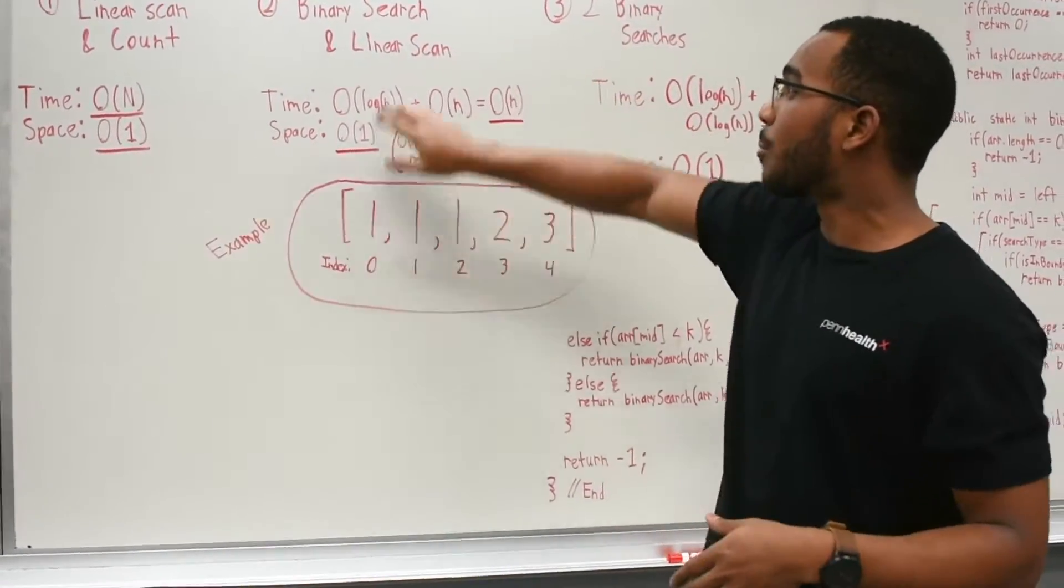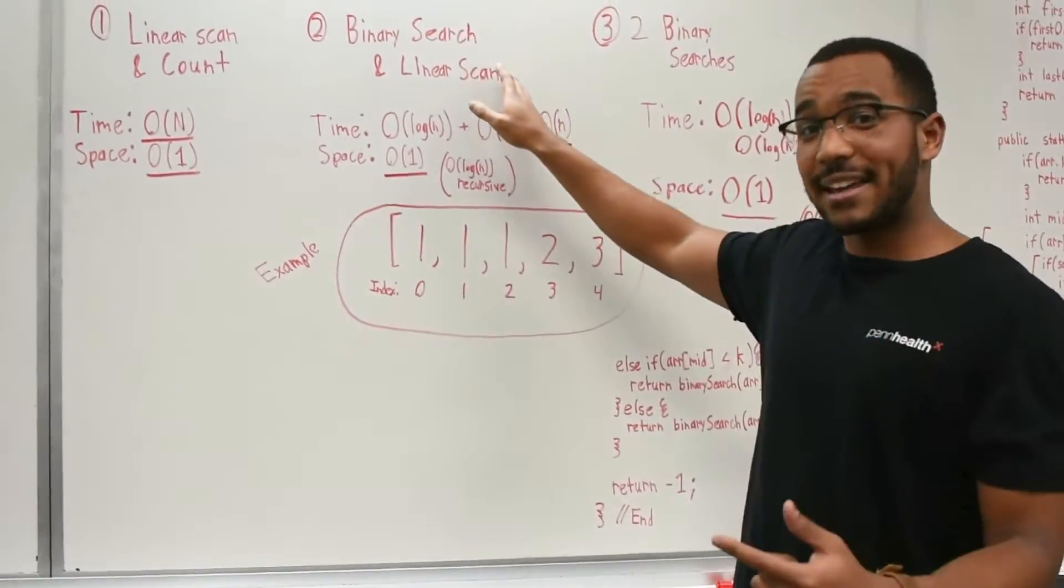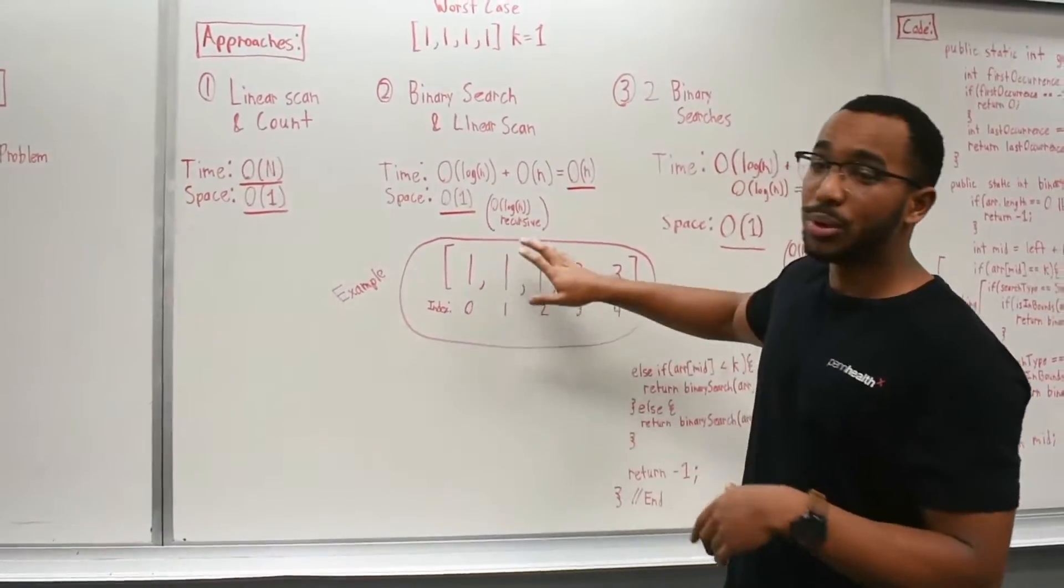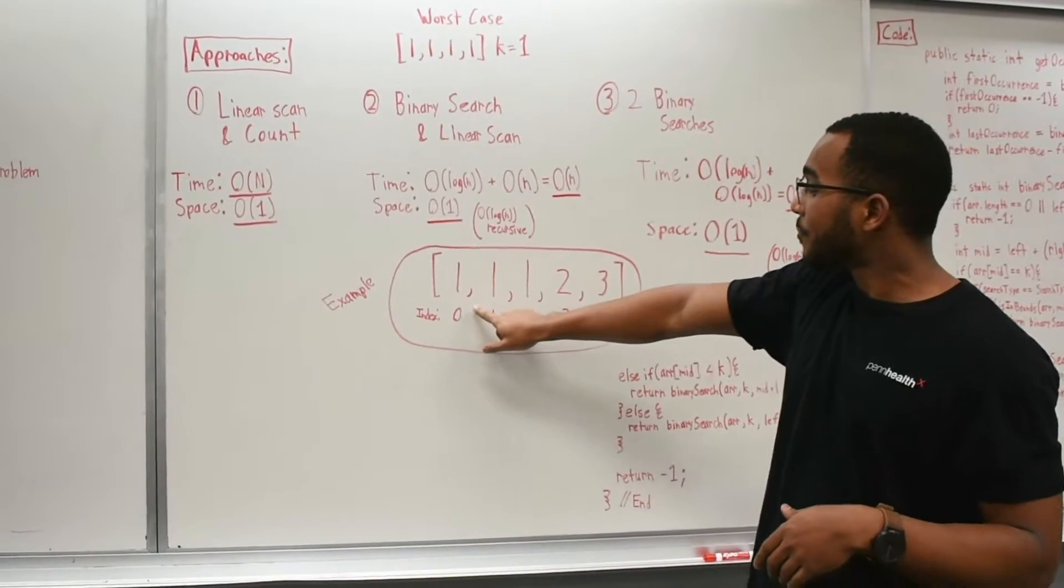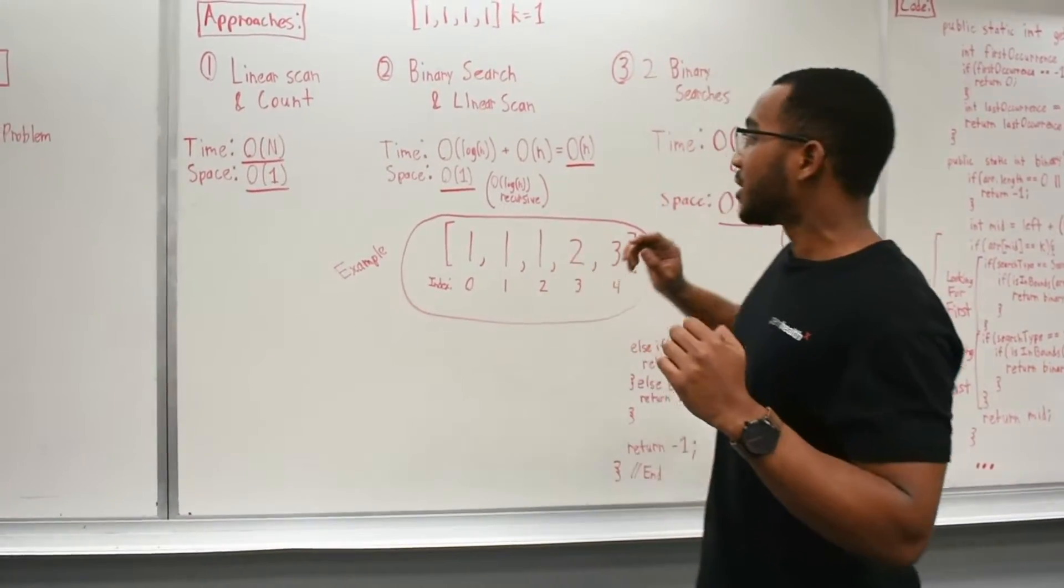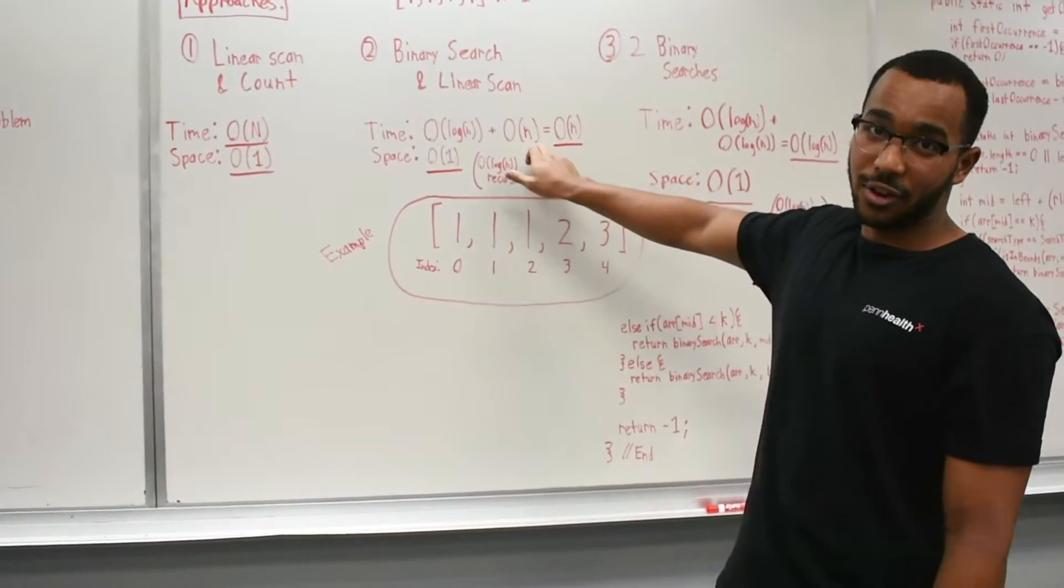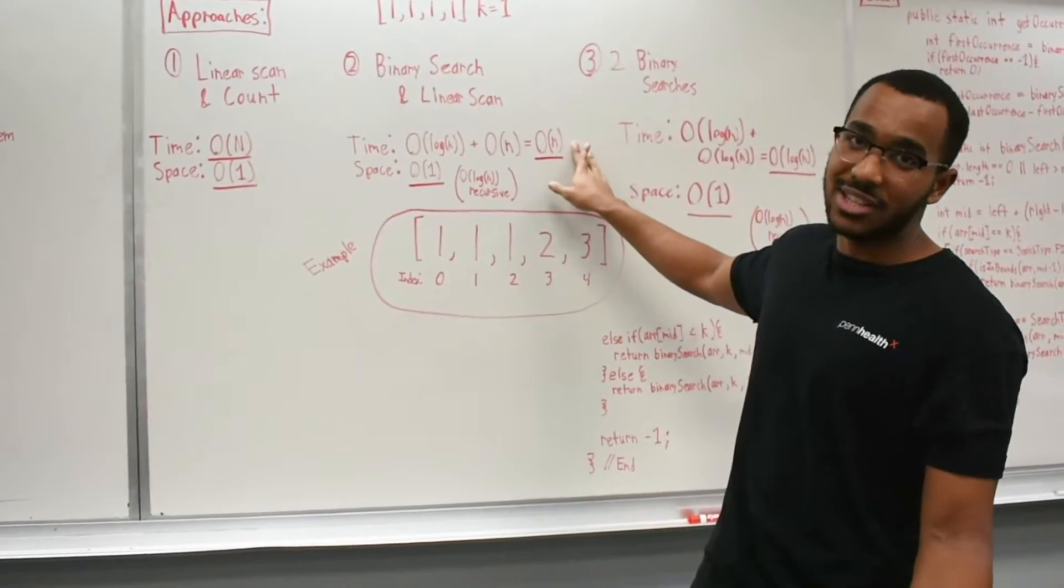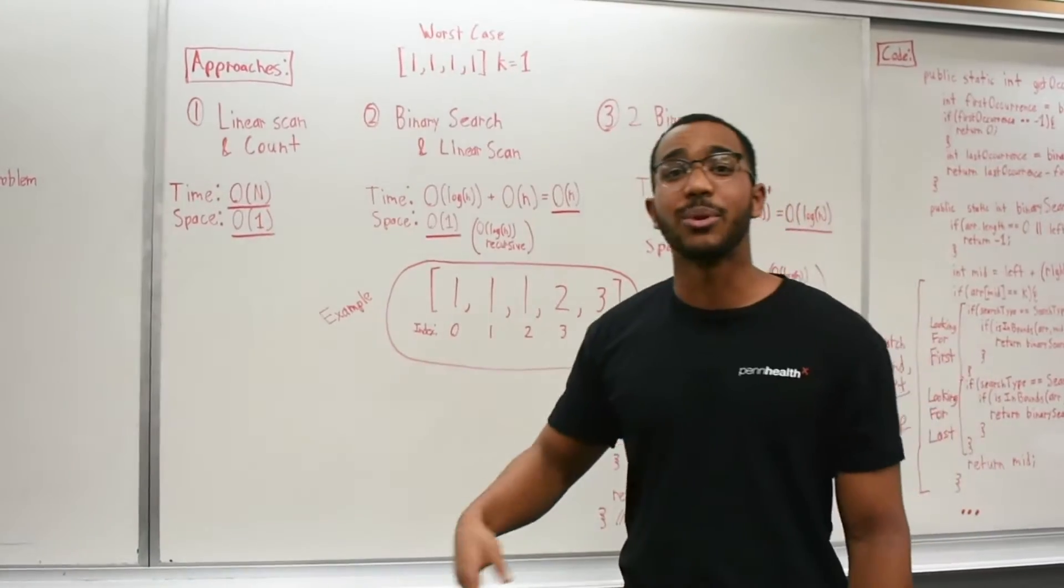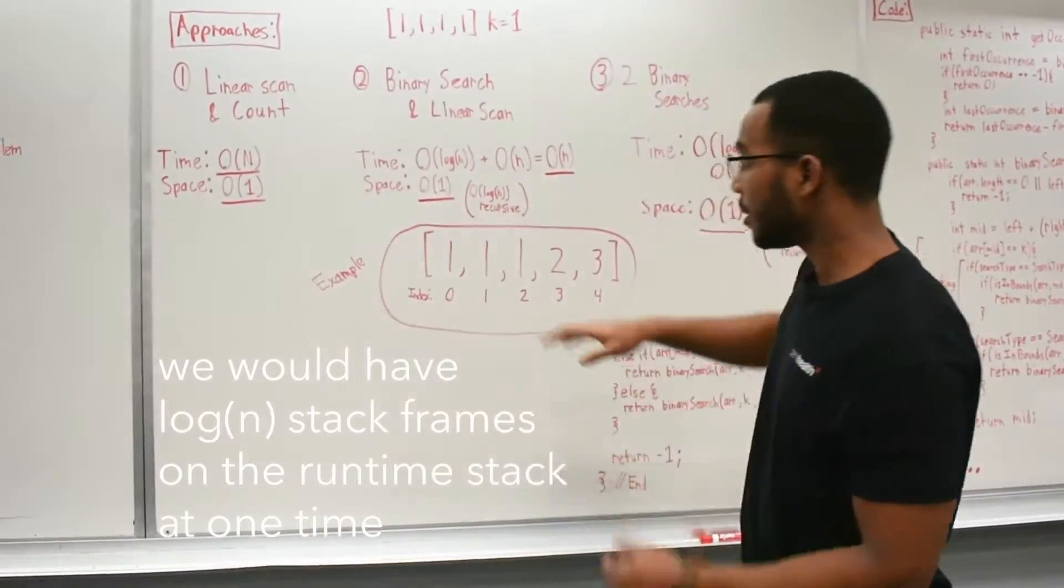So this is linear time always, but we know that our best solution is going to run in log N because it's binary search. So let's move on to what I propose next, which is approach two. We can do a binary search, which runs in log N and then do a linear scan to count the elements until we find a different element. So we would do a binary search and get the zeroth index here. And then we would do a linear scan upwards. So this runs in log N, log N for the first search and then O of N for the linear scan. And then it'll have O of N time, just like our first solution. And our binary search, if we do it recursively, we'd have log N for space complexity because of stack space. But it would be O of 1.